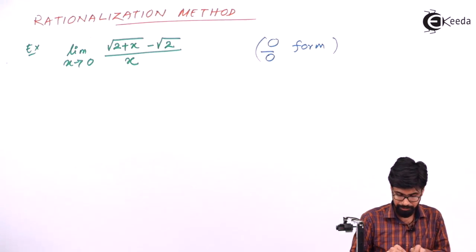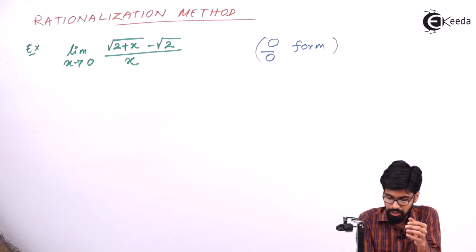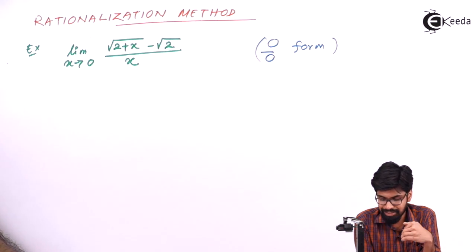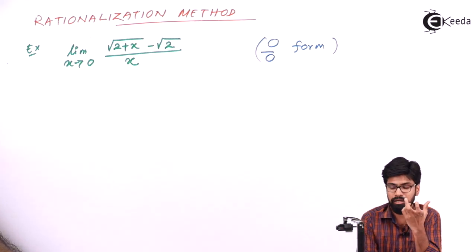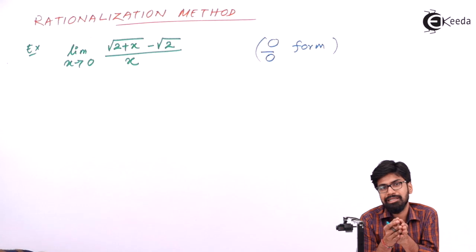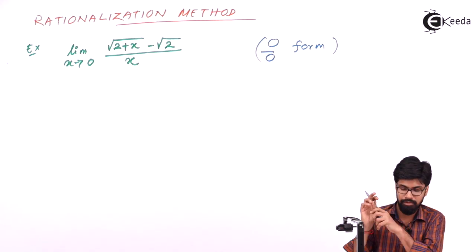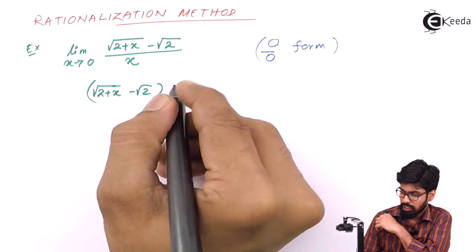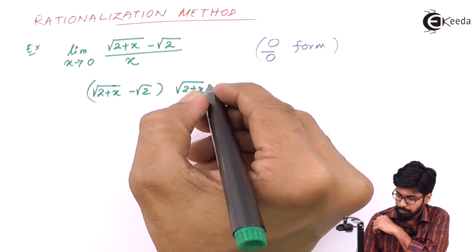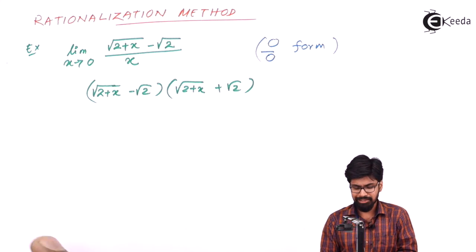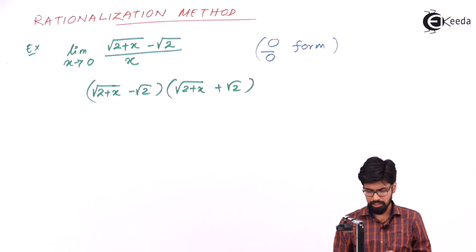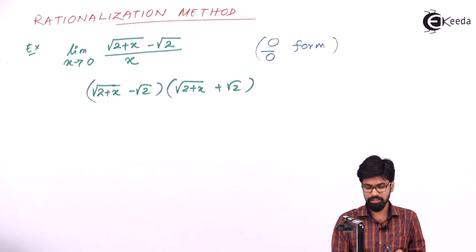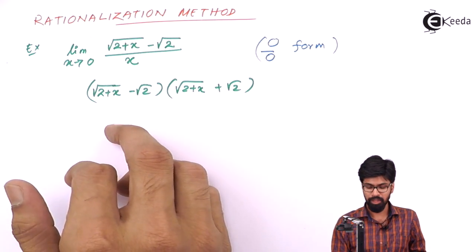Since we have a 0/0 indeterminate form, as per the rationalization method, whenever we see a square root function here in the numerator, we have to rationalize it. To rationalize a certain square root factor, we multiply it by the rationalizing factor. The rationalizing factor here is √(2+x) + √2, since it makes the original expression √(2+x) − √2 into a rational number.